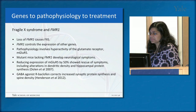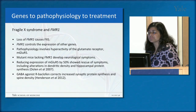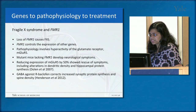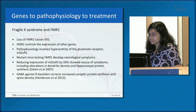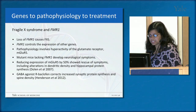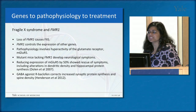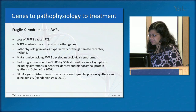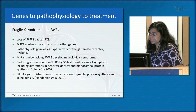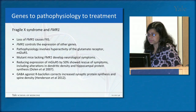Another example is Fragile X syndrome and FMR1. Loss of FMR1, which also controls the expression of other genes, causes Fragile X. The pathophysiology involves hyperactivity of the glutamate receptor mGluR5 in the brain. Mutant mice lacking FMR1 developed neurological symptoms like human patients. By reducing expression of this hyperactive glutamate receptor by just half, researchers showed rescue of symptoms including alterations in dendritic density and hippocampal protein synthesis. Another group found that the GABA agonist R-baclofen corrects increased synaptic protein synthesis and spine density in mutant mice — a real pharmaceutical agent targeting this pathway.